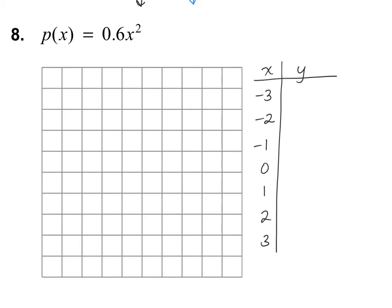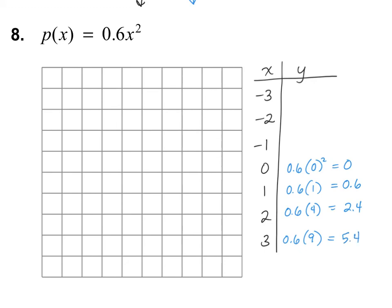Skipping to number 8, plugging into 0.6x squared. Starting with 0: 0.6 times 0 squared is 0. For 1: 0.6 times 1 is 0.6. For 2: 0.6 times 4 is 2.4. For 3: 0.6 times 9 is 5.4. These repeat on the other side — negative 3 gives 5.4, negative 2 gives 2.4, negative 1 gives 0.6.